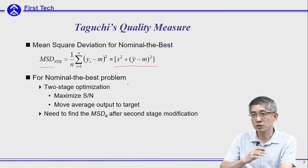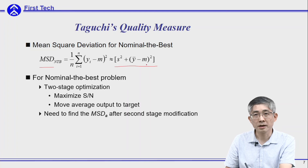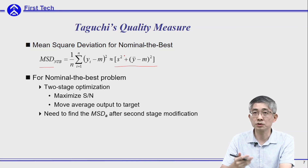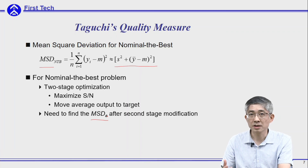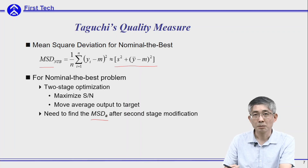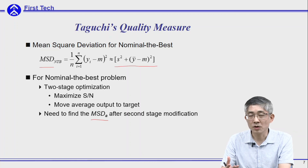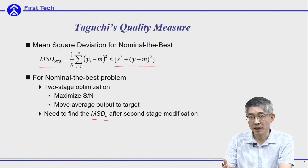In this case, after the second stage of modification — moving the mean output to the target — the mean squared deviation will change. The second part will vanish, and the first part, the standard deviation, might differ from the original. So we need to estimate what the mean squared deviation is after two-stage design optimization. This modification helps you understand why Taguchi insists his average quality loss is very similar to the signal-to-noise ratio. We will discuss that further in the next session.